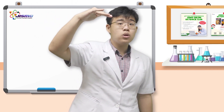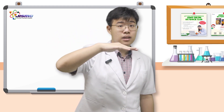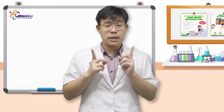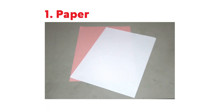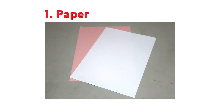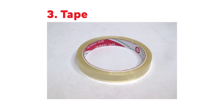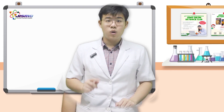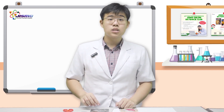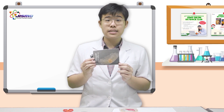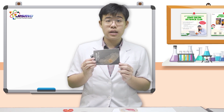Before we start this experiment, you need some equipment. First, you need a piece of paper, then some scissors, a piece of tape, and a paper clip. We will need to model the Alsomitra — here is the real Alsomitra for reference.